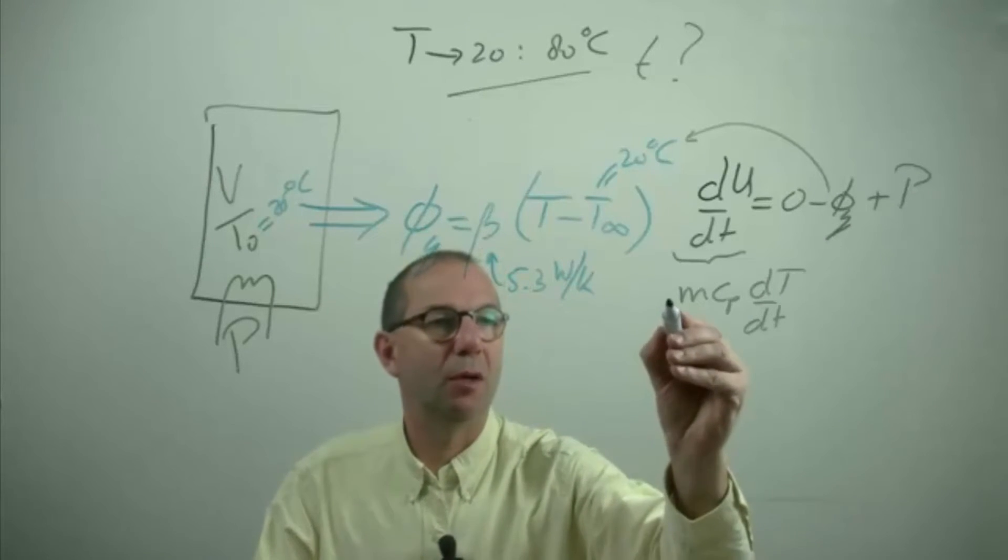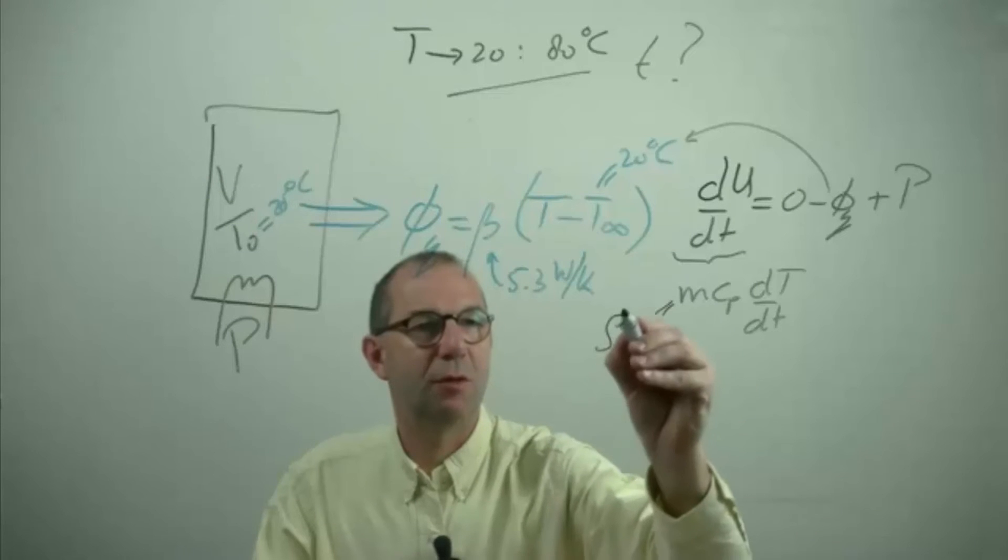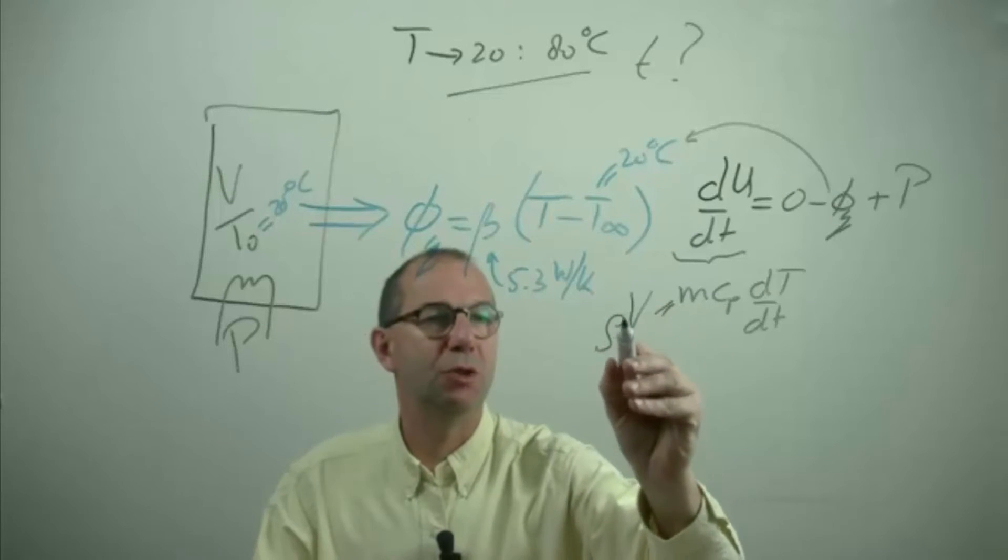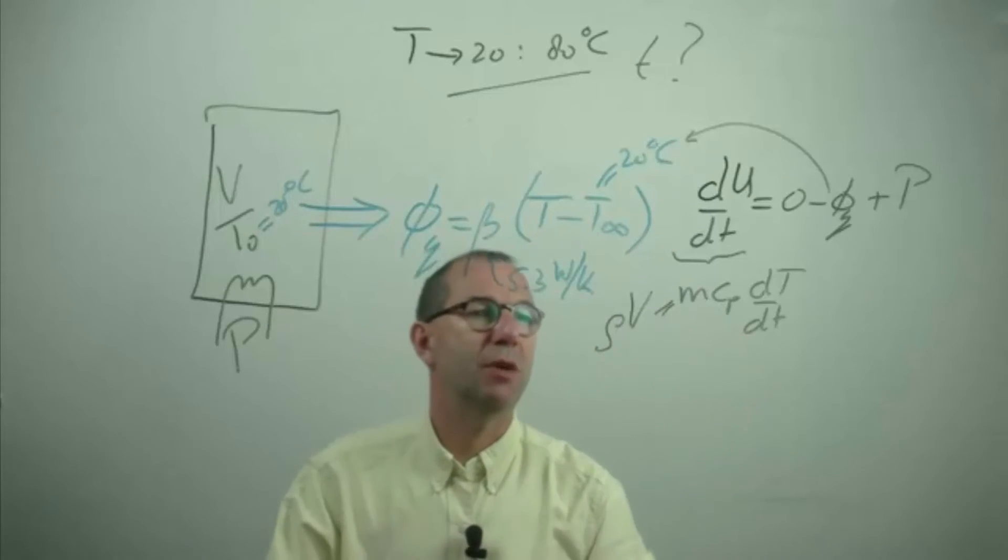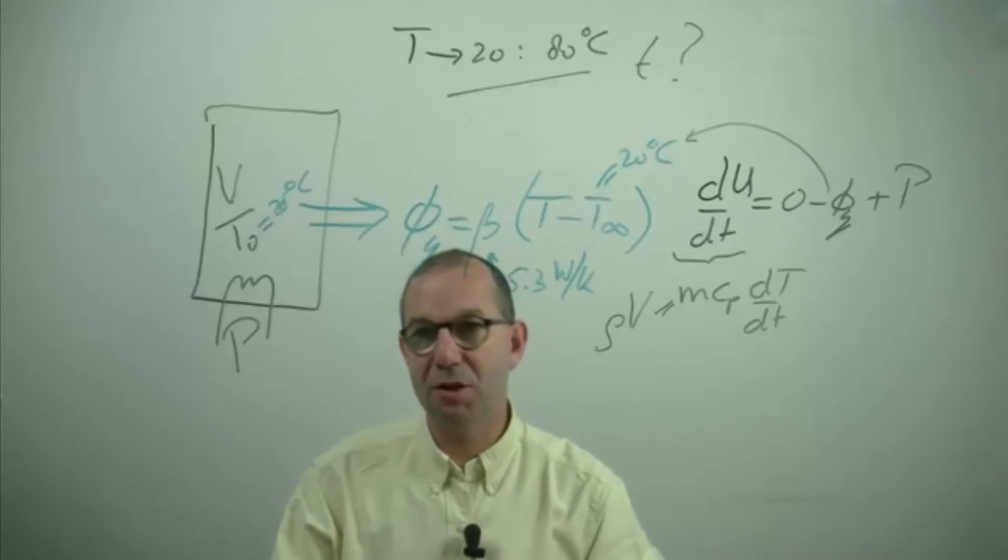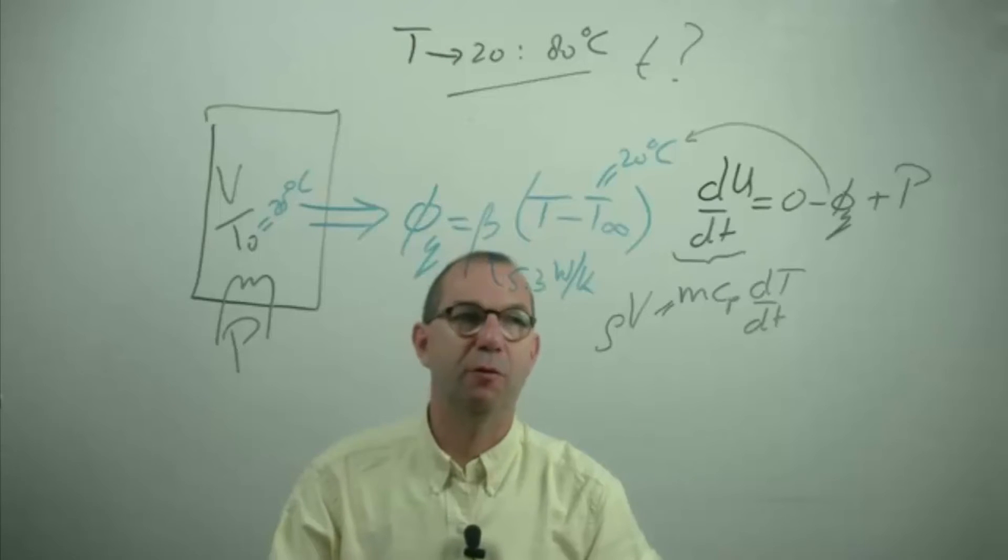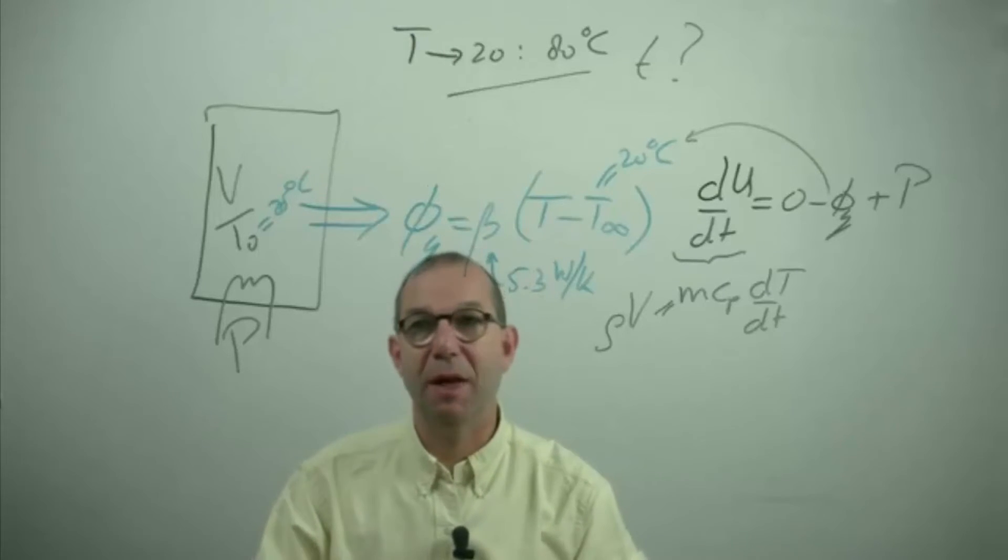I can even write if I want for this density of water times V. We're going to assume the densities, specific heat, those quantities are constant. In reality if you heat up water they are not. But to simplify stuff we do that and they don't change very much. So the answer is not critically depending on this.